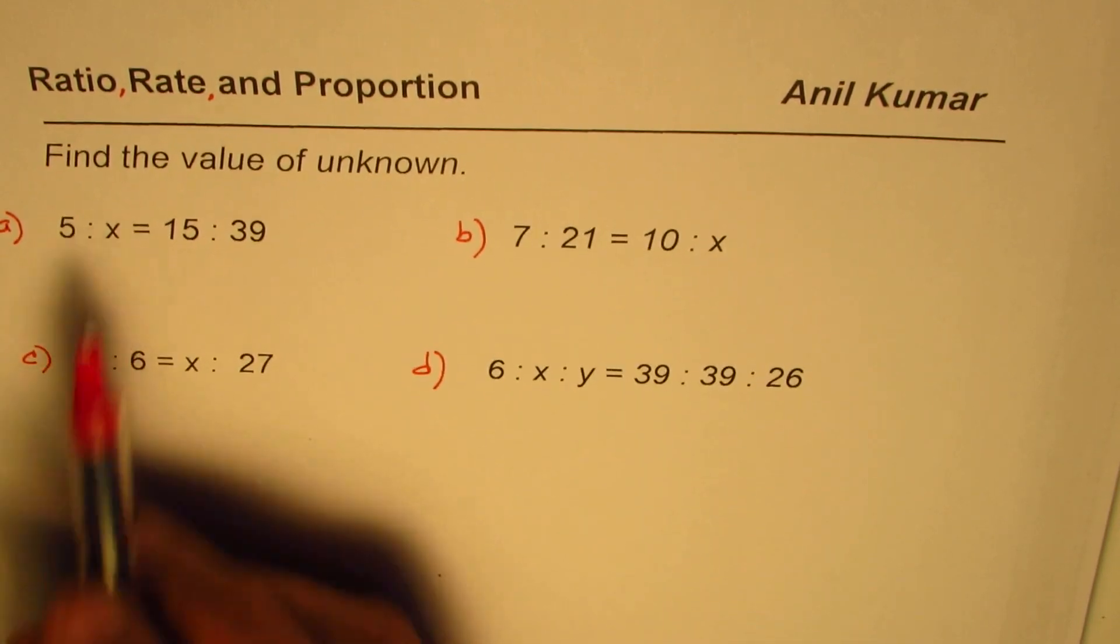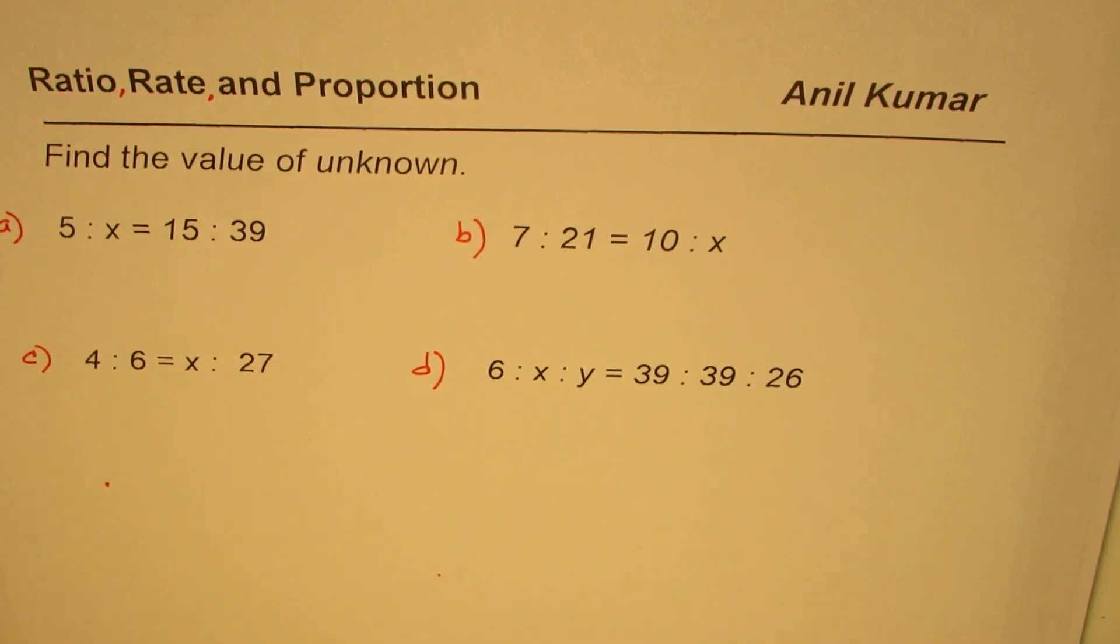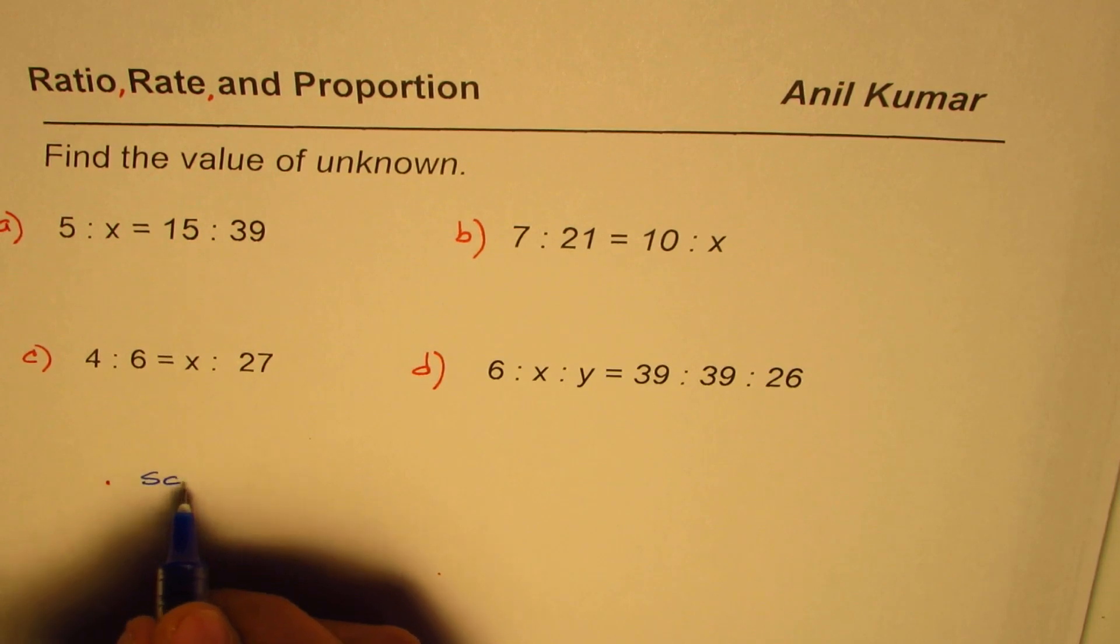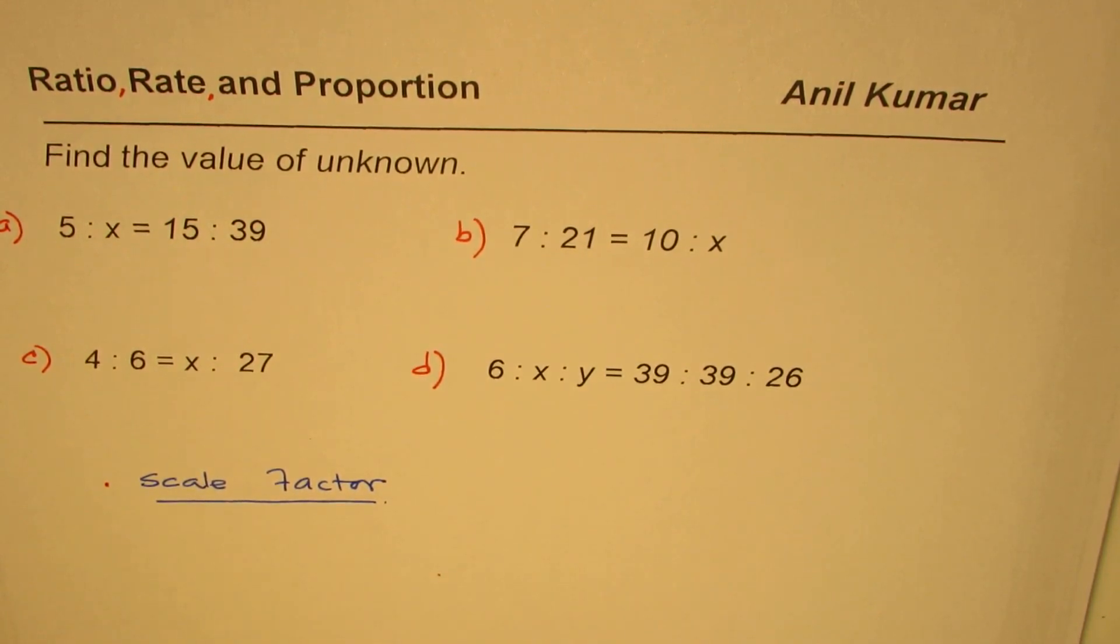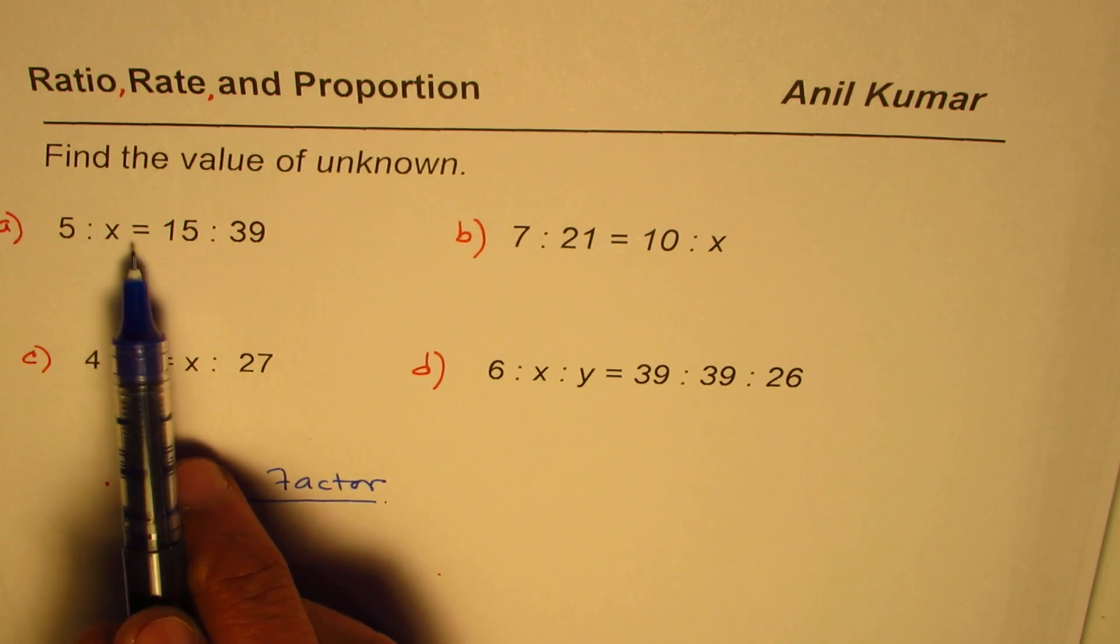Now the key here to find x is to find the scale factor, correct? So we'll find the scale factor and then find the answer. That is the key for solving such ratio problems. 5 is to x equals to 15 is to 39.